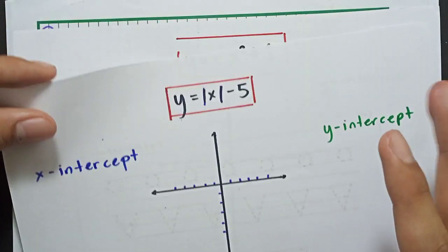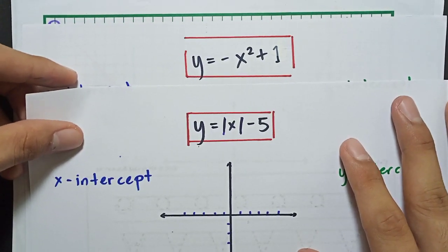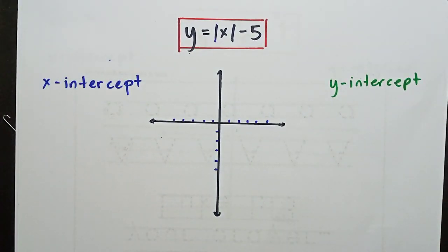And also, for this equation, y equals negative x squared plus 1. So we have two examples. Let's start.